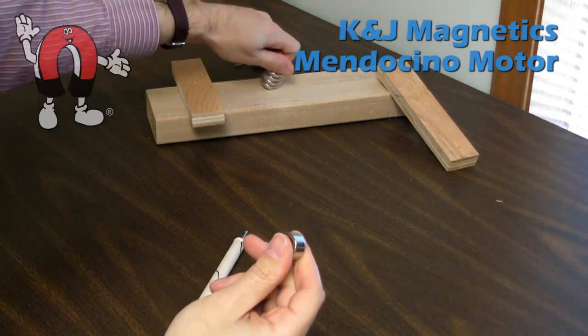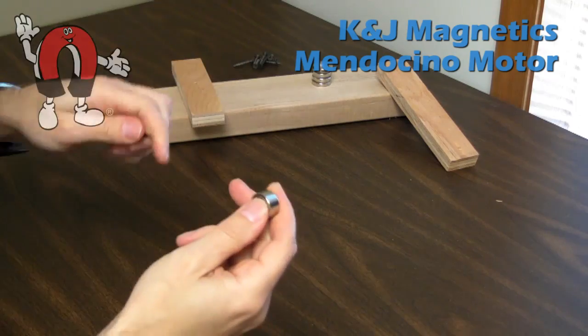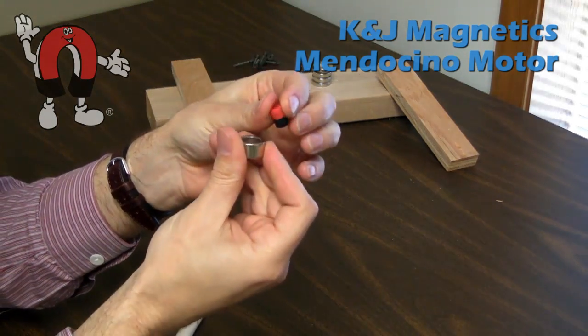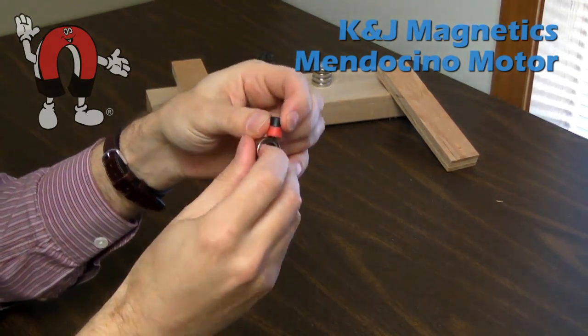We use a plastic-coated D68PC-RB magnet. That's half red, half black, where the red is the North Pole.